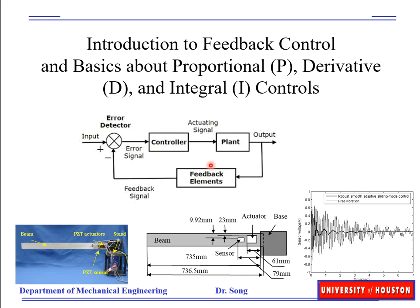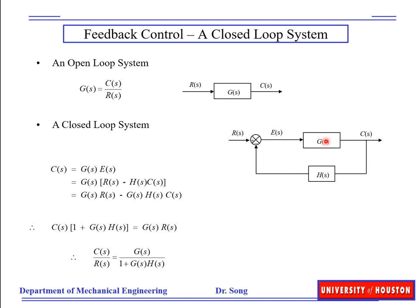We can combine the control and the plant — since they are in serial connection — into one block, G(s). This represents open loop with no feedback control; closed loop includes feedback control. We can have positive or negative feedback, and we can easily derive the transfer function of this feedback system: G(s) over 1 plus G(s)·H(s).